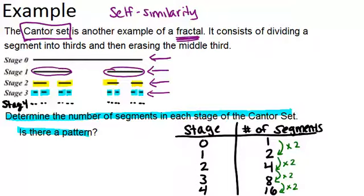It's also good to think about, could we make a rule for if we wanted to know in stage 10, how many segments are there? How could we do that without having to go through and figure out how many are there in stage 8, in stage 9, and then stage 10? So in order to do that, we need to figure out a connection between the stage number and the number of segments.